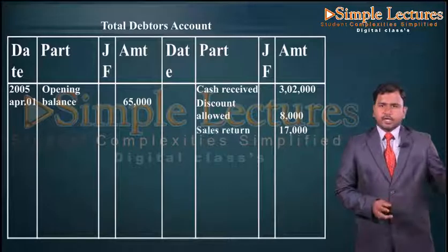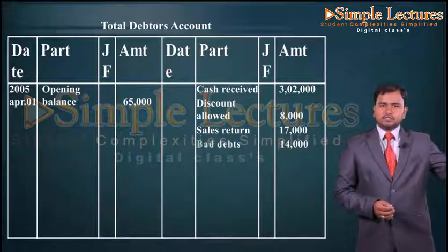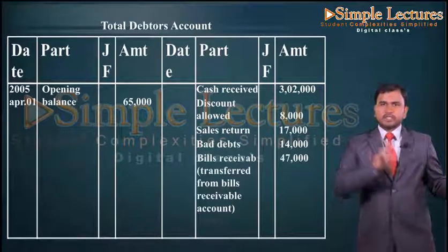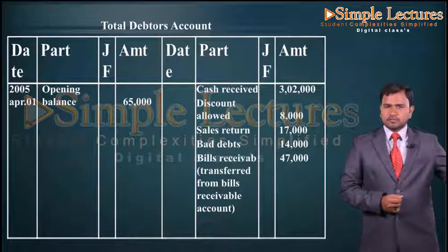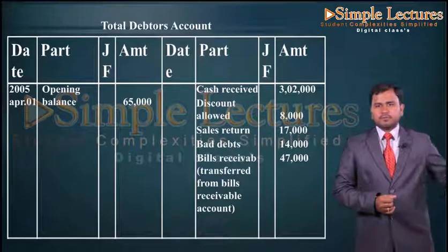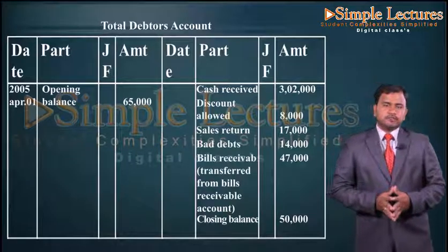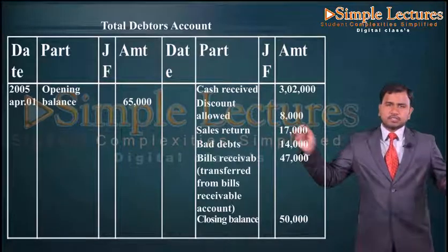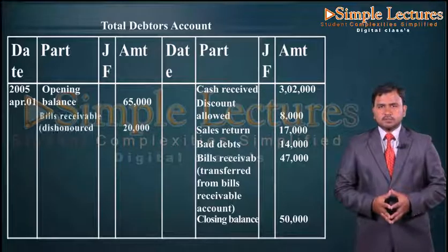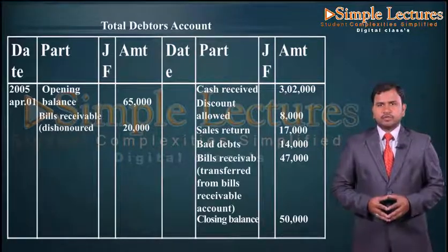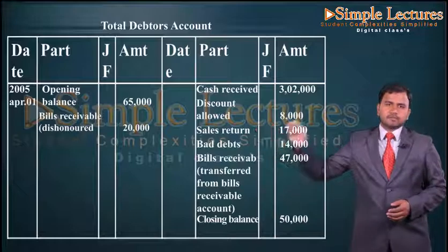Then discount allowed, again on the credit side: discount allowed eight thousand. Sales return, again on the credit side: sales return seventeen thousand. Bad debts: fourteen thousand. Bills receivable transferred from the total bills receivable account: forty seven thousand — in bracket, transferred from bills receivable account. The closing balance of total debtors account is fifty thousand, recorded on the credit side. Bills receivable dishonored is recorded on the debit side: twenty thousand.